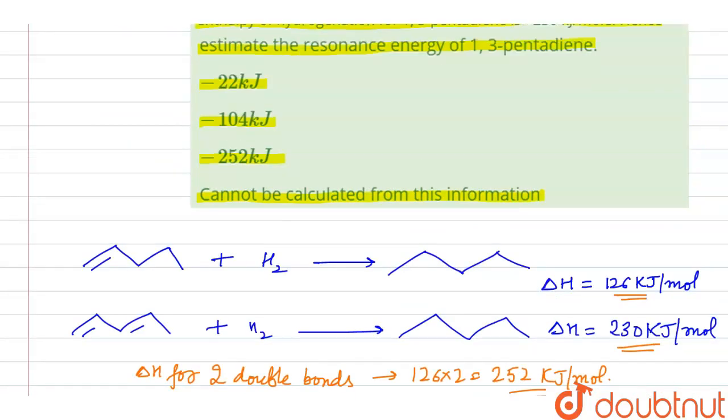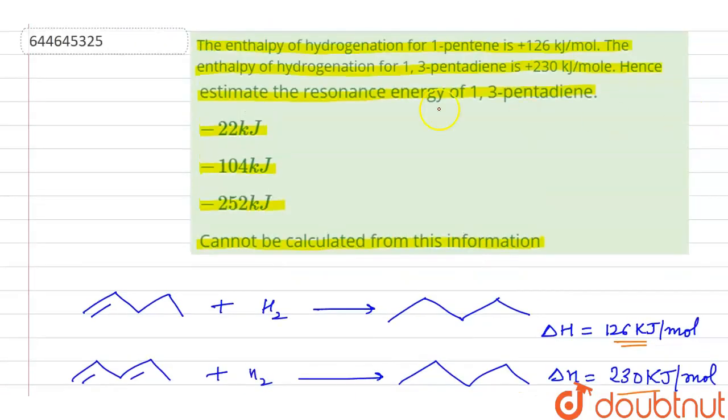So correct option here, the estimated resonance energy for 1,3-pentadiene is minus 22 kJ. So that is option first is correct.